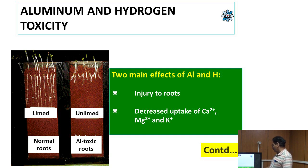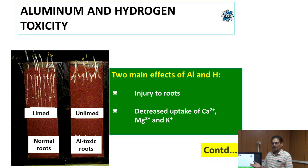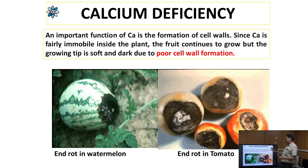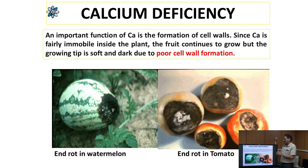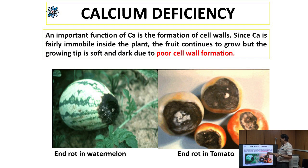Two main effects of aluminum and H are: injury to the root, and decreased uptake of calcium and magnesium. It is said that if our root development decreases, then our uptake of nutrients will be declined. Calcium deficiency is a common feature in the acidic soil condition. You can see in this picture, because calcium is a main component of cell wall formation. In the deficiency of calcium, our development of the cell wall will be diseased, and these types of symptoms you can see in the further slide.